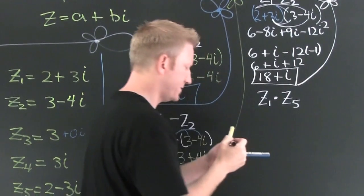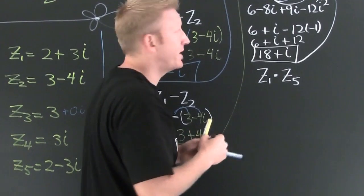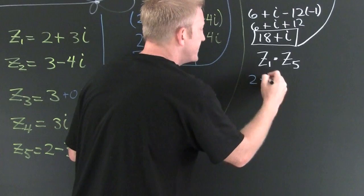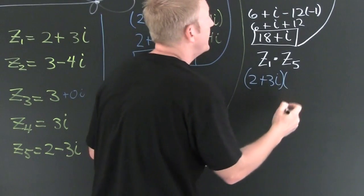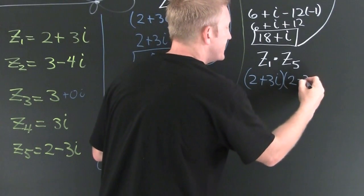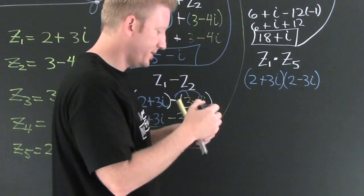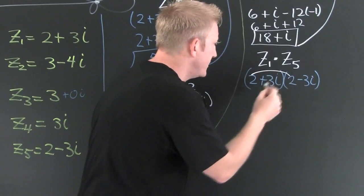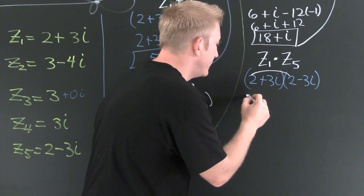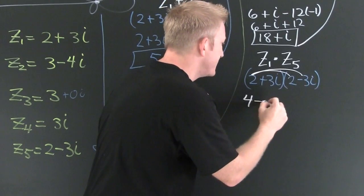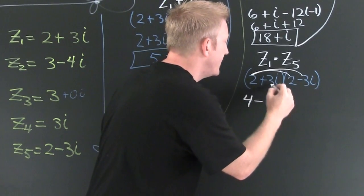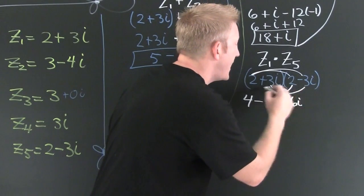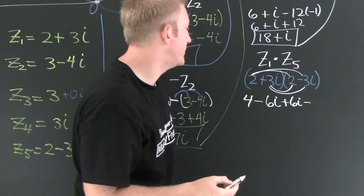Let's take another product. This is kind of special. Here I'm going to take 2 plus 3i and multiply it by 2 minus 3i. That's your z1 and your z5. I'm going to FOIL it. This is 4 for sure. The outer is minus 6i. The inner is plus 6i. And then finally last, that's minus 9i squared.